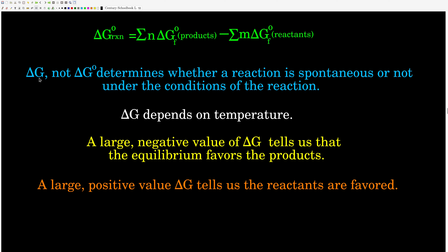We're going to see how that relates to delta G in a few minutes. The analogy with delta G is: if we have a large negative value of delta G, the equilibrium favors the products and it will shift to the right to come to equilibrium. If it's a large positive delta G, it will shift to the left and the reactants are favorable.